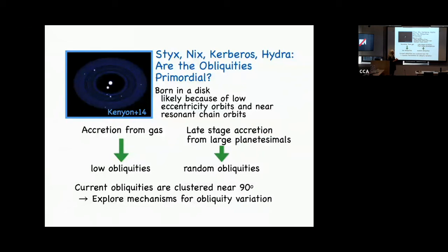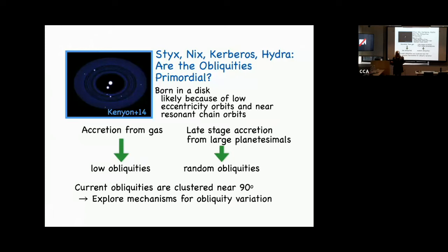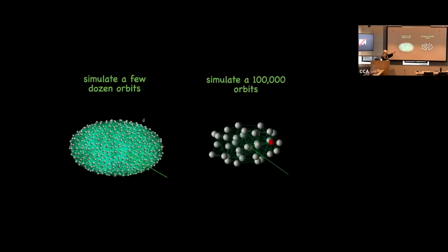How is the system formed? Are the obliquities of Styx, Nix, Kerberos, and Hydra primordial? They were probably born in a disk — they're in the same plane, low inclination, nearly resonant chain, low eccentricity. If the satellites formed from accretion of gas or pebbles, they'd retain the disk's angular momentum and obliquities should be zero. If there was a late stage of accretion with collisions, spin directions might be realigned. The fact that they're clustered around 90 degrees raises the question of whether it's odd or expected.